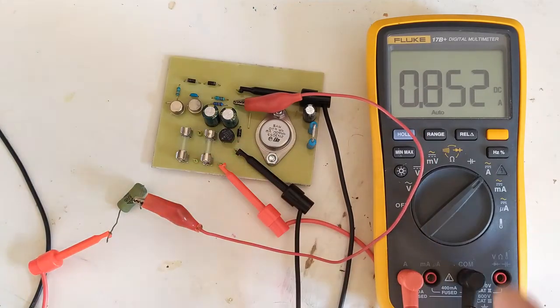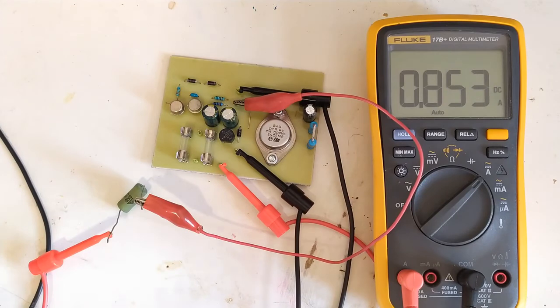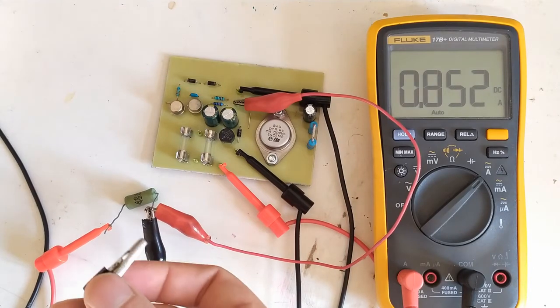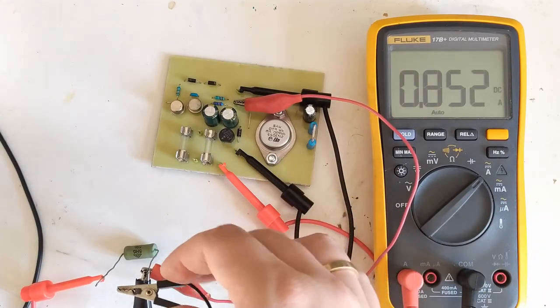And if I connect this here, I'm getting 0.8 amps which is what we expect. And to test if the current limiting is working, I'll hook up this second resistor and we should go up to about 1.7 amps but the current limit is set to about 1.5 amps.